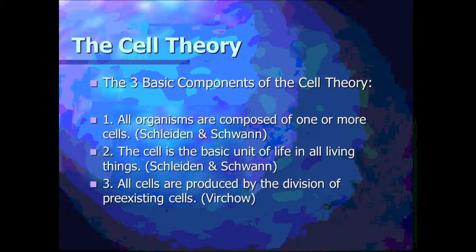Part one: all organisms are composed of one or more cells. Basically, if you are a living thing, you have to have at least one cell. Humans are composed of around 100 trillion cells, while something like euglena has only one cell — both are living, and all living things must have a cell. Part three is Virchow's contribution: all cells come from pre-existing cells, produced by cell division — either mitosis, meiosis, binary fission, and so on.